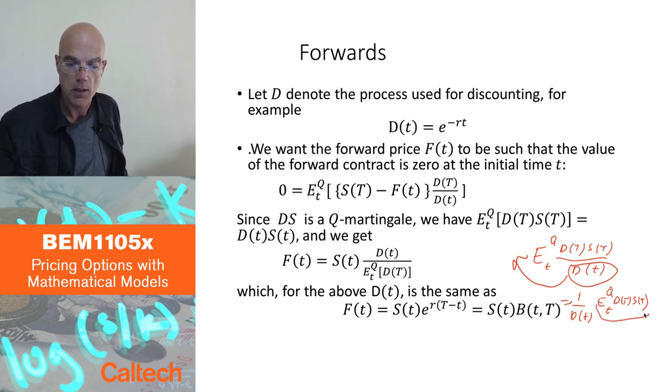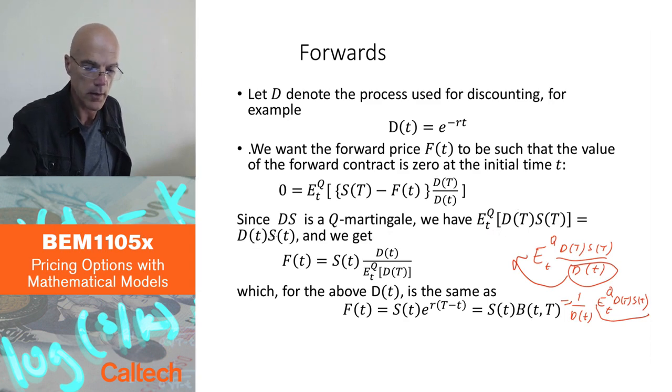But this thing here, I know what it is. That's this formula here. It's equal to d(t) lowercase, s(t) lowercase. Why? That's the Martingale property. Expectation of the future discounted price, stock price, underlying, is today's price, discounted price.